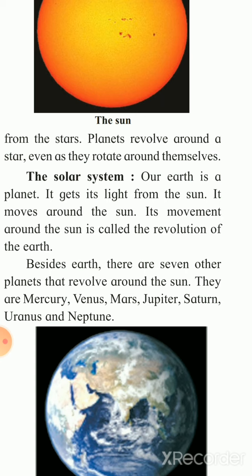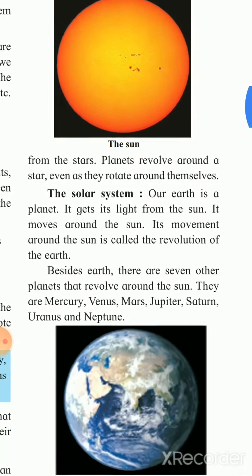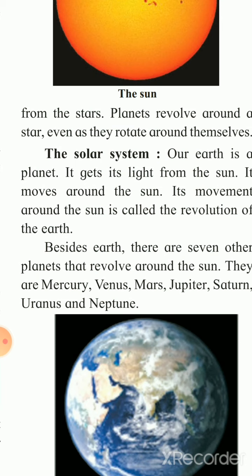Earth is non-illuminated - it does not have its own light. It gets light from the sun. Earth moves around the sun, and this movement around the sun is called the revolution of the Earth. Underline this word and write it five times as a hard word.